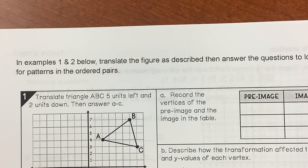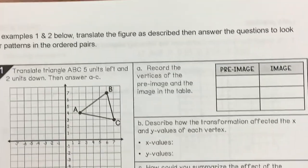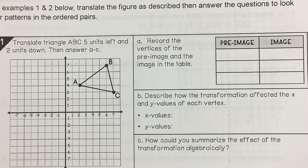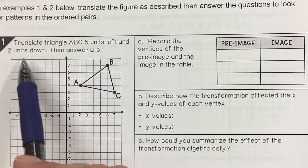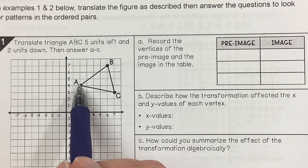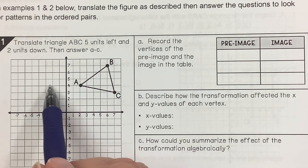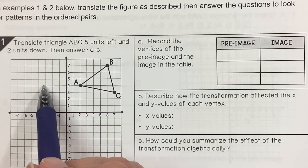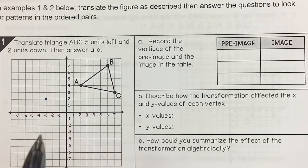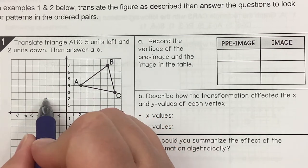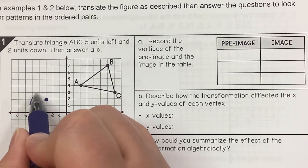In Example 2: Translate triangle ABC 5 units left and 2 units down. Let's do A first — 1, 2, 3, 4, 5 units left; 1, 2 units down. There's my new point. Since it's A that moved, I'm going to call this new point A prime.